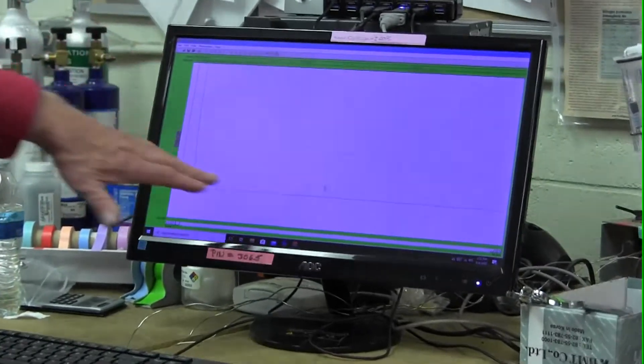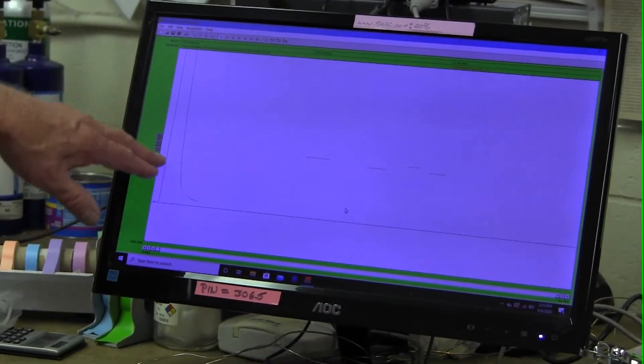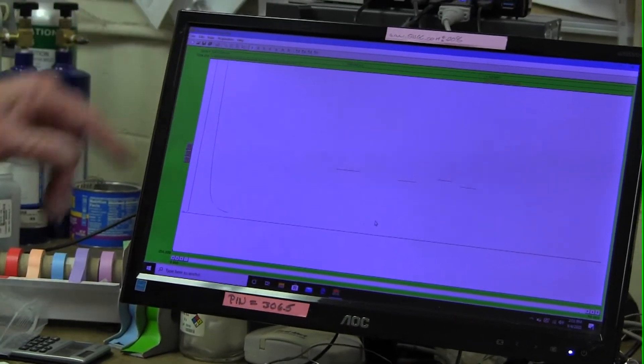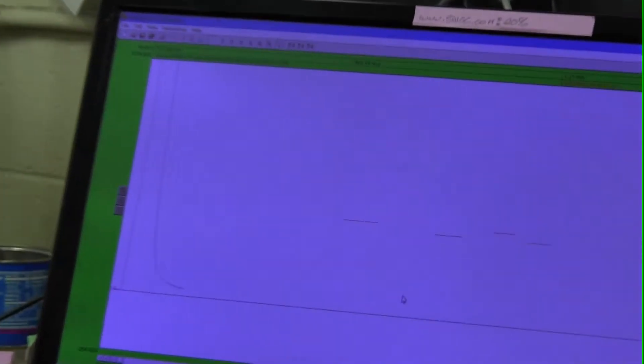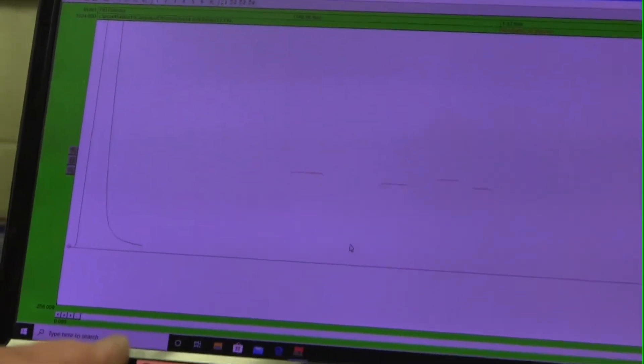The first thing that happens is there's this tremendously high spike. Well, that's the acetone arriving at the detector. So that happens right away, and then there's a gap before the next molecule, which is going to be the methyl stearate, the palm oil.